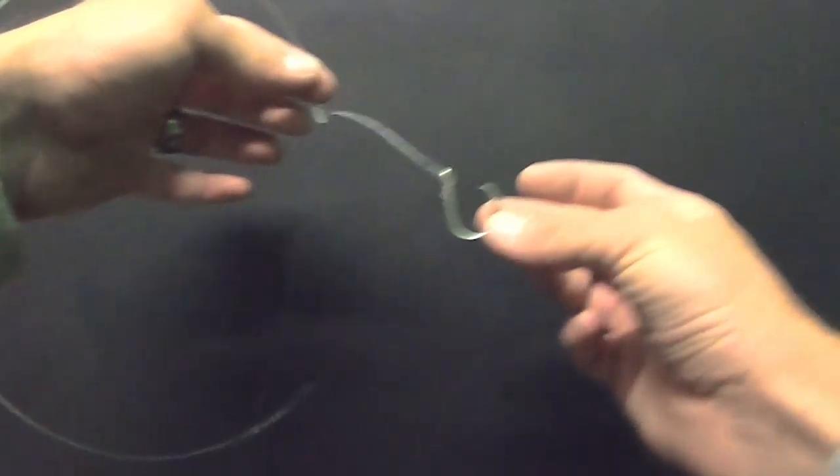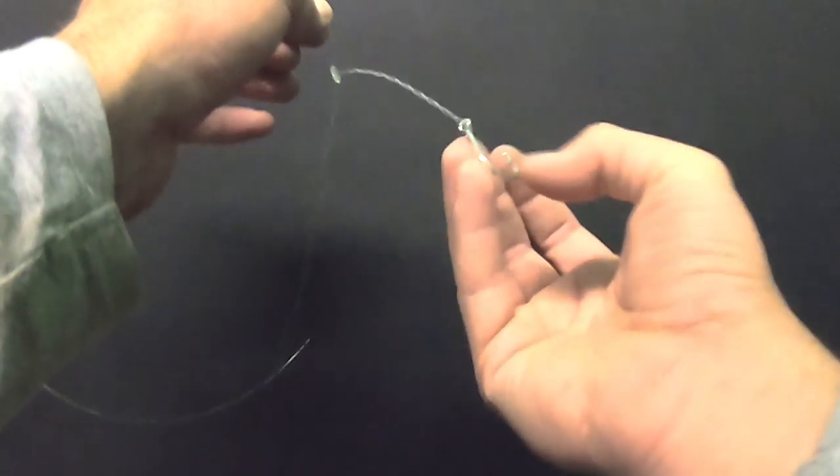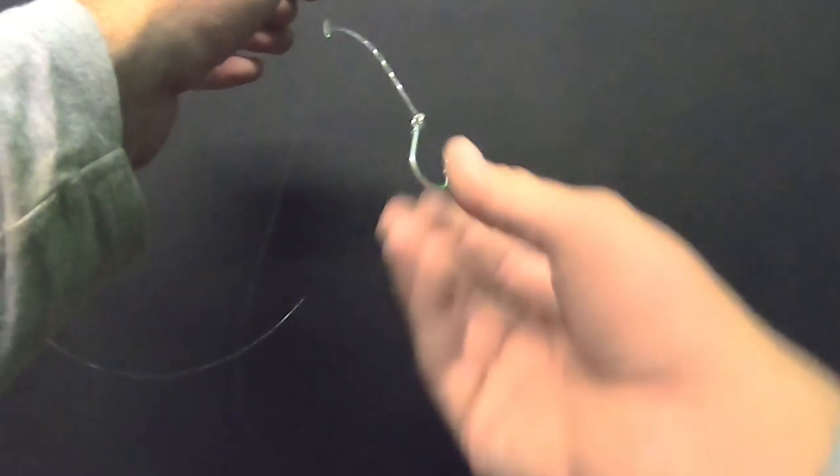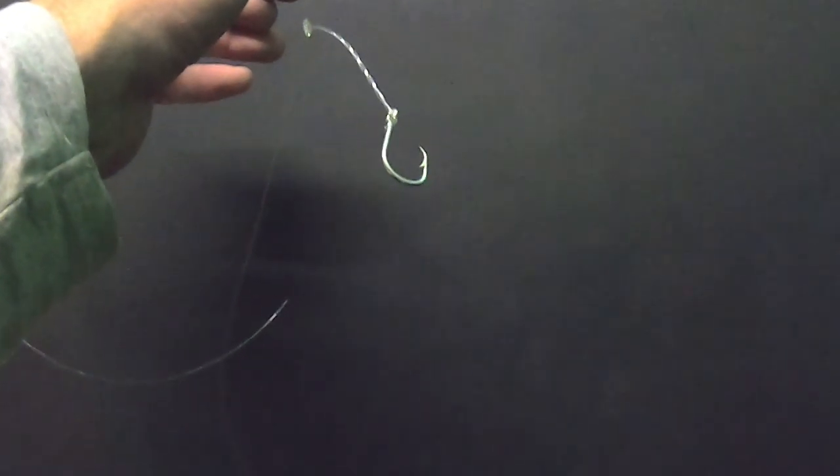That is wrong. The fish can come in from the bottom, take your bait, and off it goes. And your hook up ratio would be a lot less if you have the hook sitting like that.